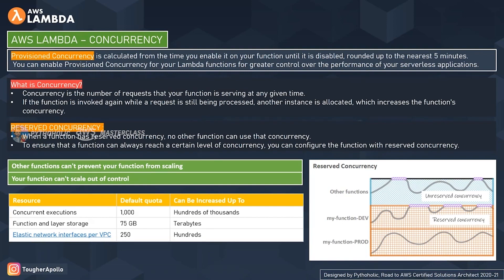Looking at this diagram, the whole space represents total concurrency. The orange pattern is the reserved concurrency and the purple line represents the throttling duration. When my-function-dev throttles, it doesn't exceed the reserved concurrency limit, and other functions running on unreserved concurrency won't be able to prevent my-function-dev from scaling.